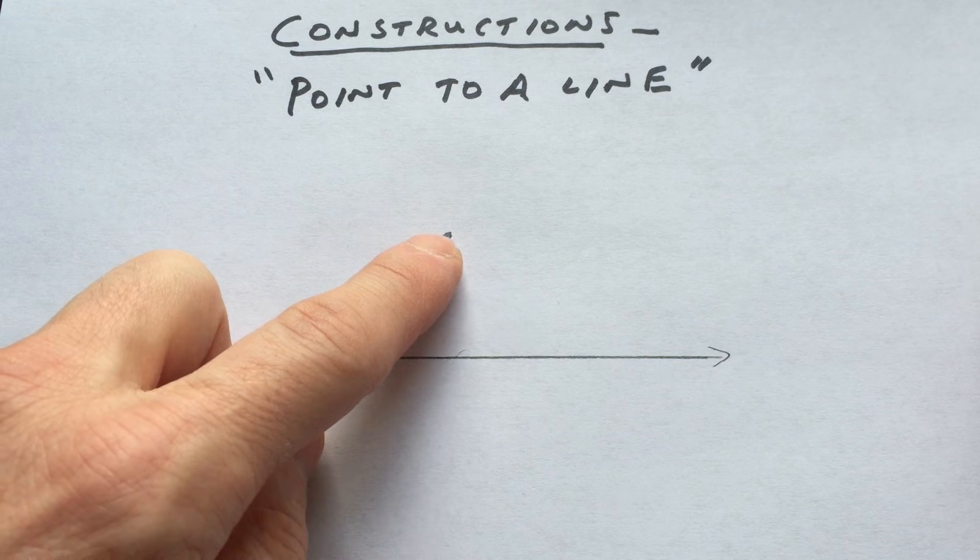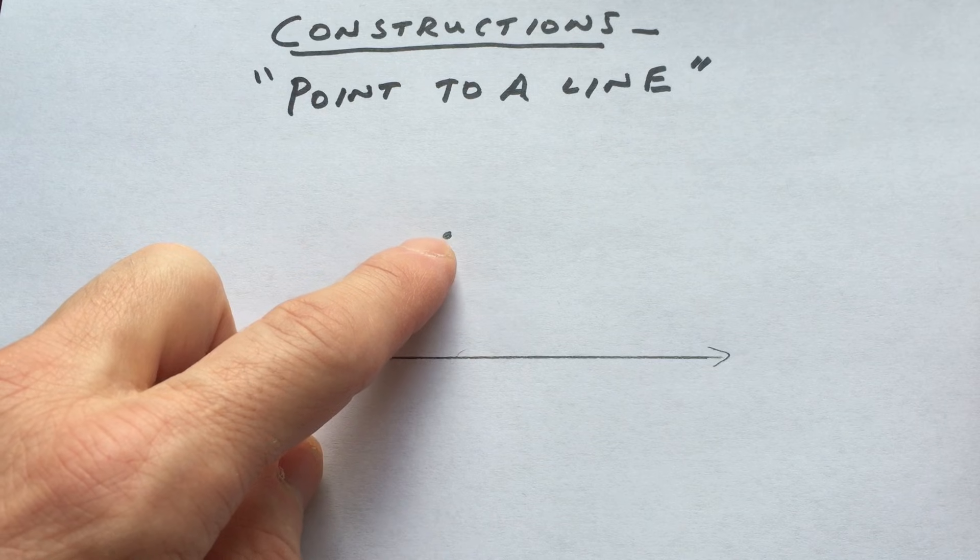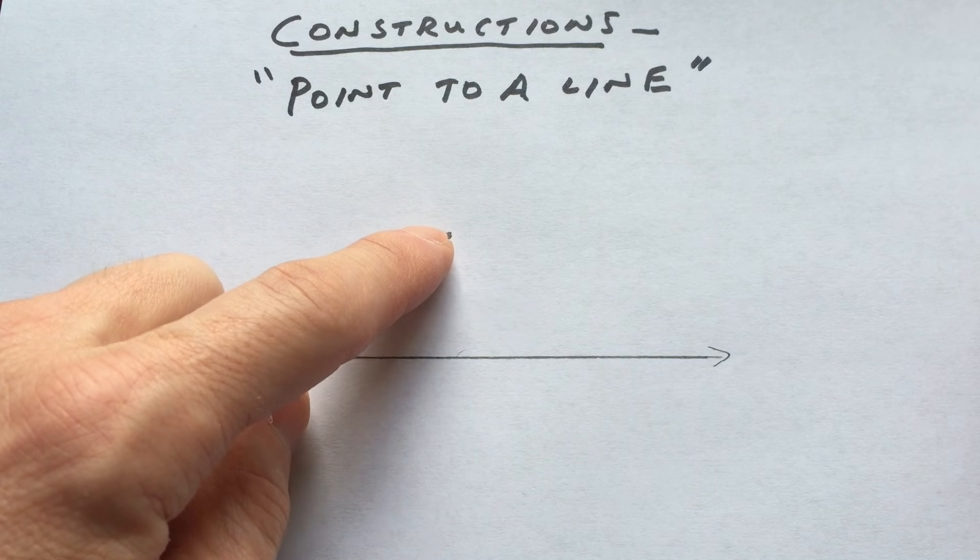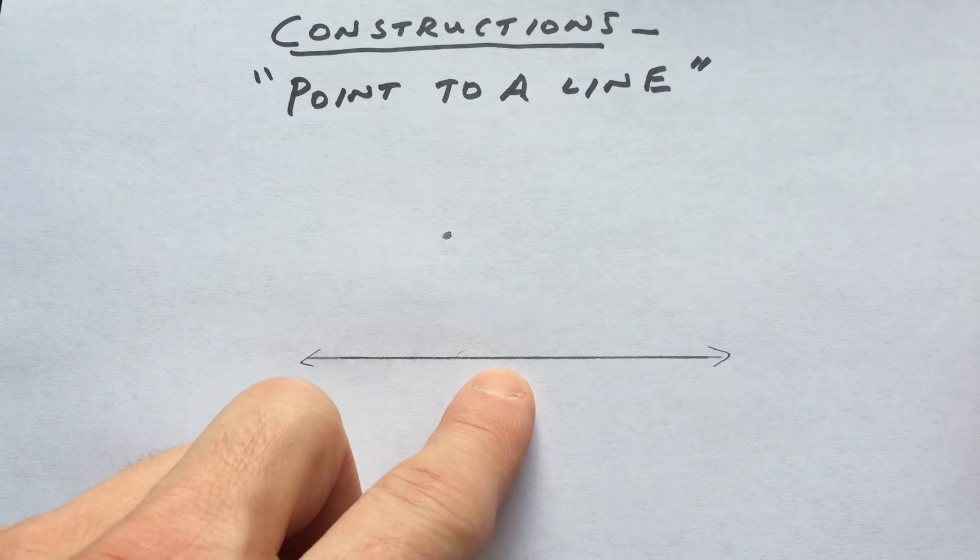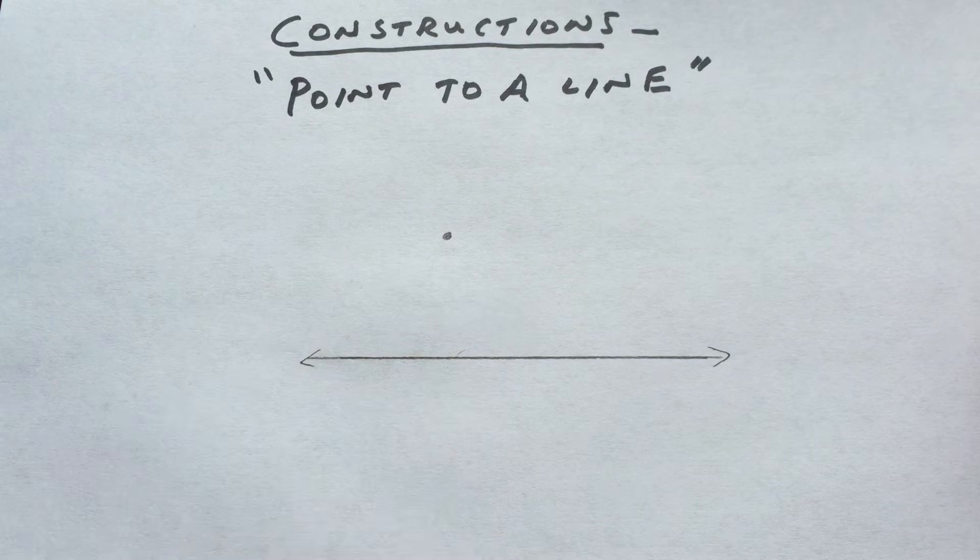So the way we're going to do this is very similar to when we found the perpendicular bisector, and I showed you that in one of the previous videos. We drew a perpendicular and we bisected the segment. We're going to do something similar here. We're going to find the perpendicular from the point to the line.